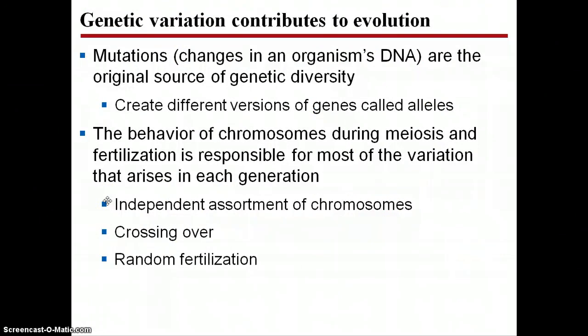The last thing we're going to talk about is genetic variation — why it is so important and how it is created through meiosis. Genetic variation can arise through mutation: any change in the organism's DNA can create genetic diversity. This is particularly important if it happens in the gametes, because during gamete formation, a mutation to the organism's DNA can produce possibly new alleles — new versions of the gene that can be passed on from generation to generation. The behavior of chromosomes during meiosis and fertilization can also create variation through independent assortment, crossing over, and random fertilization.